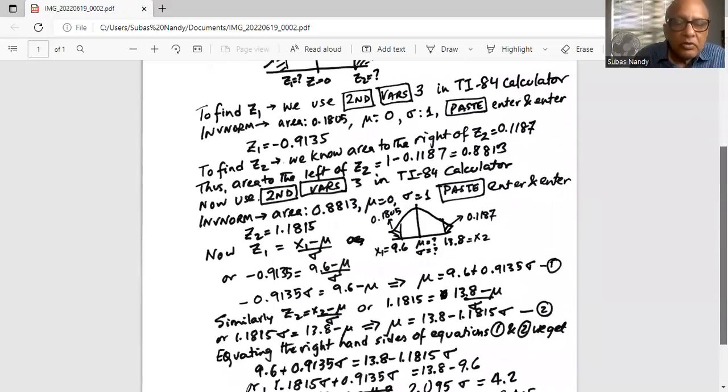Similarly we substitute the value of z2 which is 1.1815 and it corresponds to a random variable value 13.8. So we have 1.1815 is 13.8 minus mu divided by sigma. Mu and sigma are both unknown. Again we simplify and get an equation for mu from this relationship as 13.8 minus 1.185 sigma.